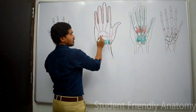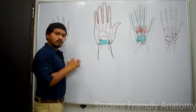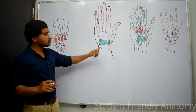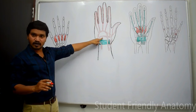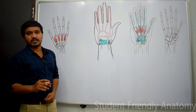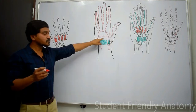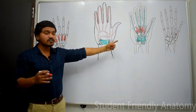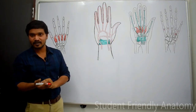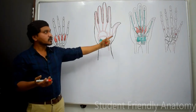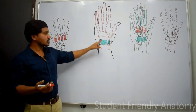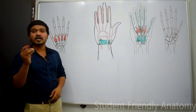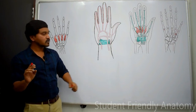The deep palmar arch is formed by the main continuation of the radial artery anastomosing with the deep branch of the ulnar artery. It lies between the interossei and metacarpal bones posteriorly, and the long flexor tendons and lumbricals anteriorly. Within the concavity of the deep palmar arch, the deep branch of the ulnar nerve is found.